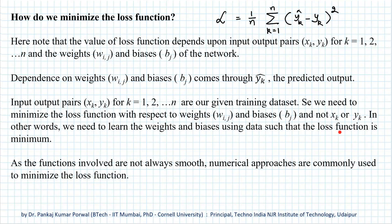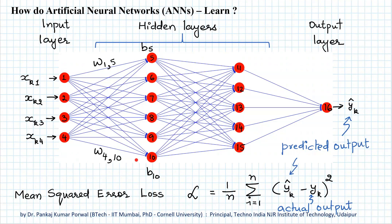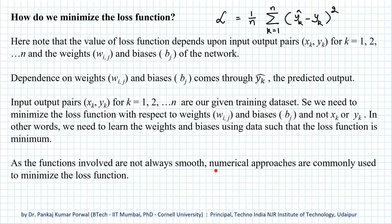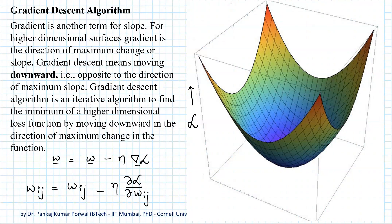In general, the activation functions for nodes in our network are not smooth, so the loss function will not be a smooth or differentiable function. Therefore, numerical approaches are commonly used to minimize the loss function, and the most common numerical approach is the gradient descent algorithm.